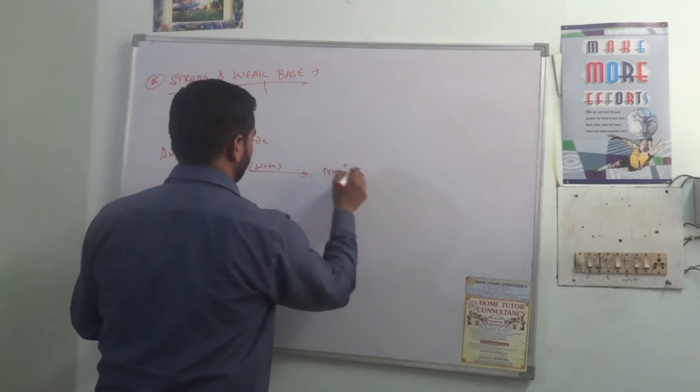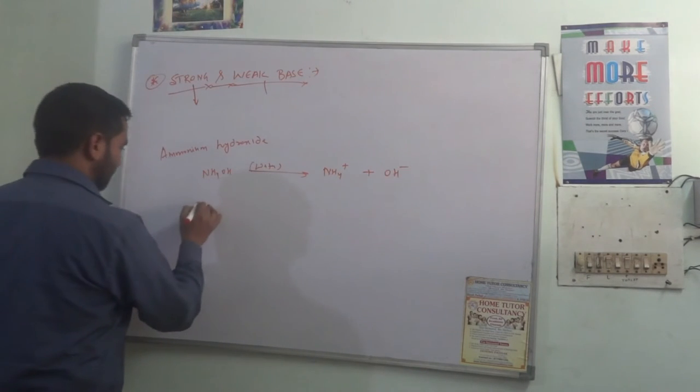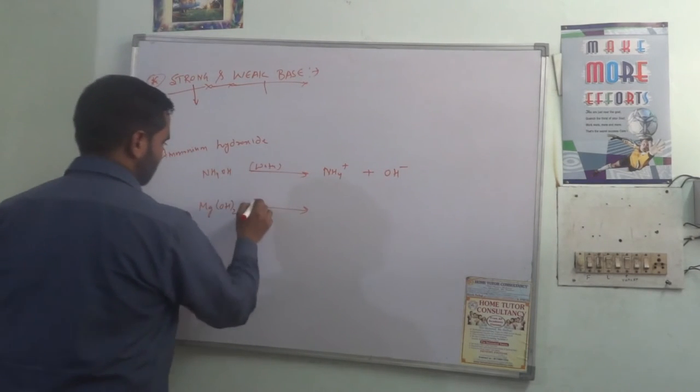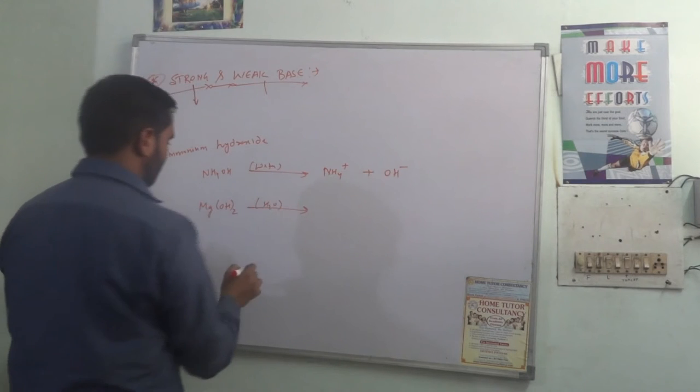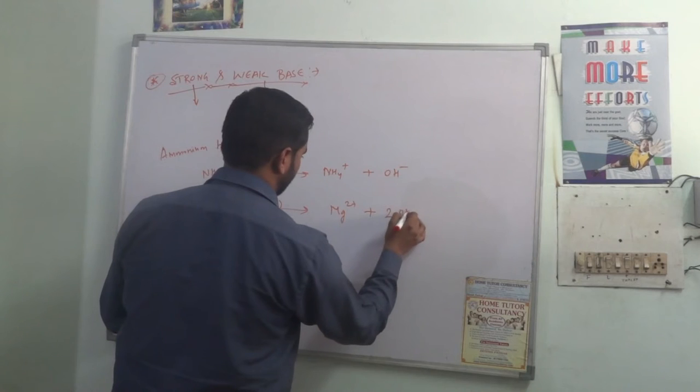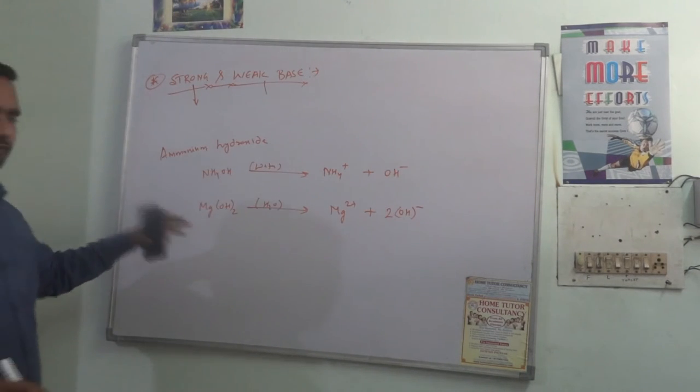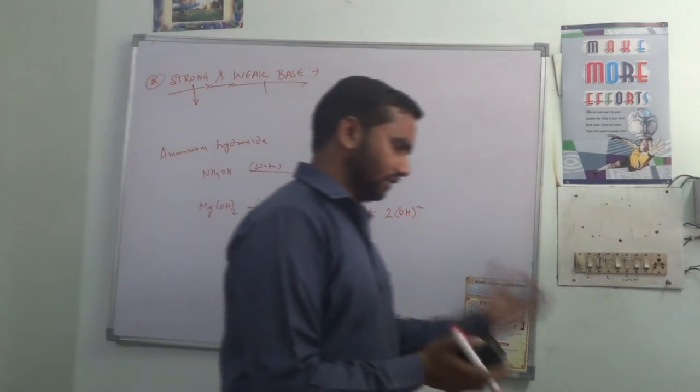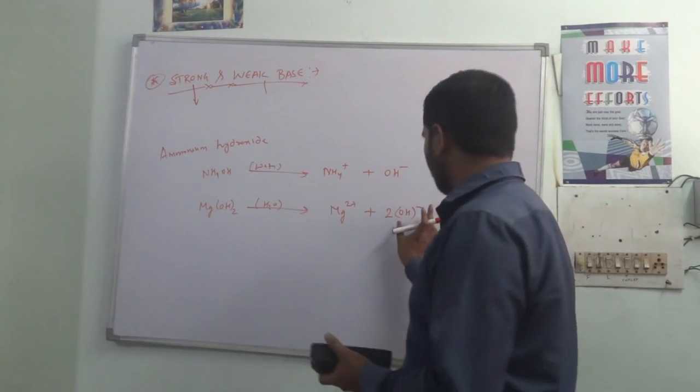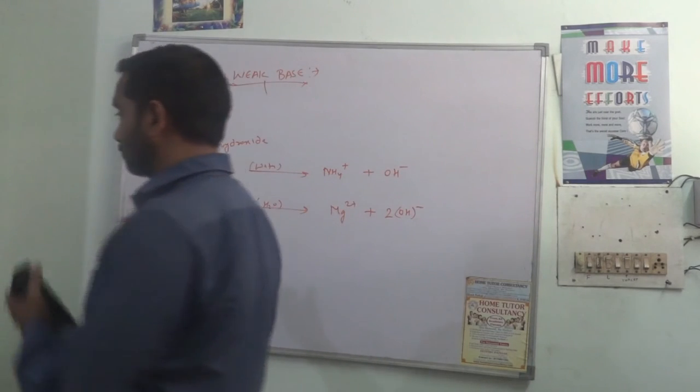NH4+ plus OH- same magnesium hydroxide water soluble Mg2+ plus 2OH-. These are weak bases because the replacement or releasing of OH- ion or hydroxyl ion is very less or to small extent.